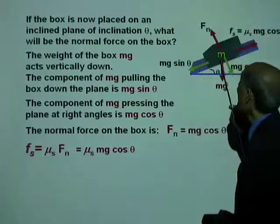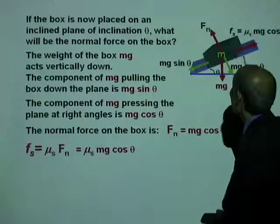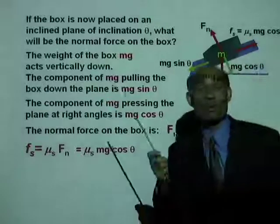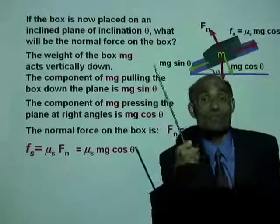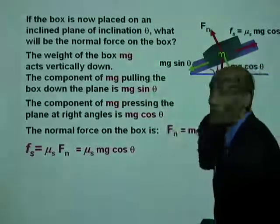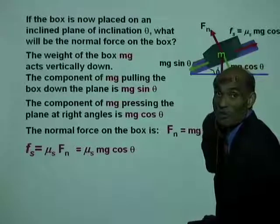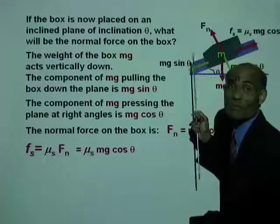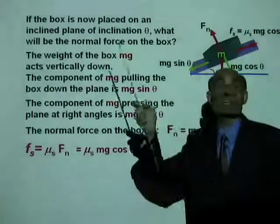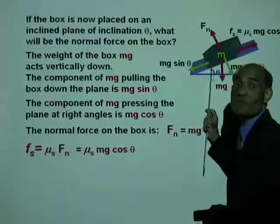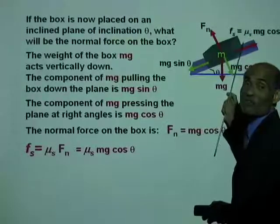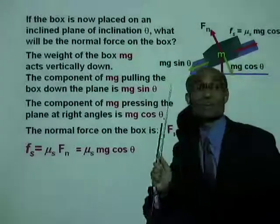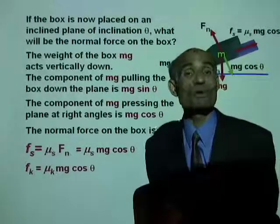If you now want to move this object up, remember, the frictional force always opposes motion. If the object is trying to move down, the frictional force will be acting up. If you want to pull the object up the inclined plane, the frictional force will be acting downward, because friction always opposes motion.